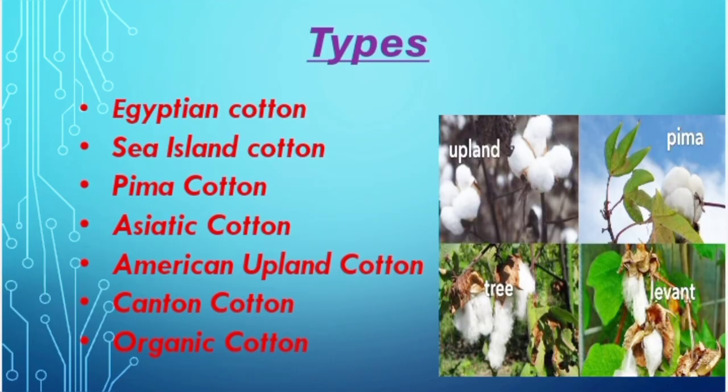Then we see the types of cotton. Types of cotton are Egyptian cotton, Sea Island cotton, Pima cotton, Asiatic cotton, American upland cotton, Canton cotton, and Organic cotton. There are some photos of the cotton types.